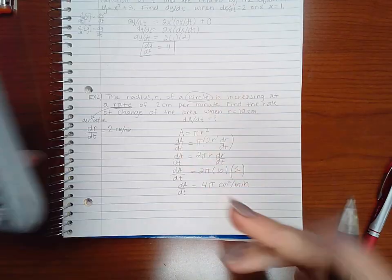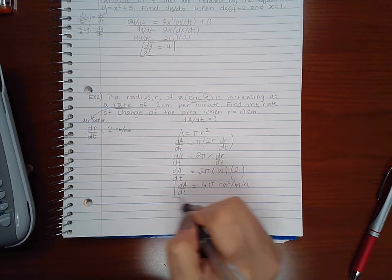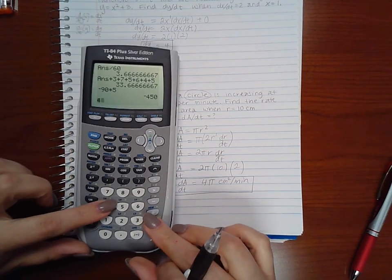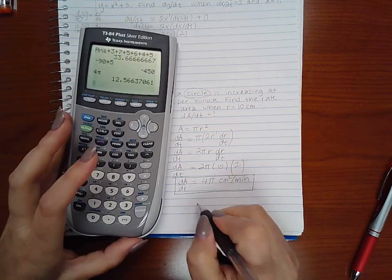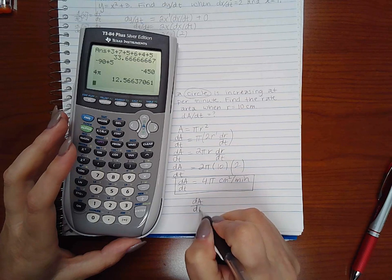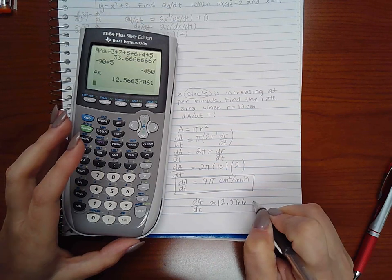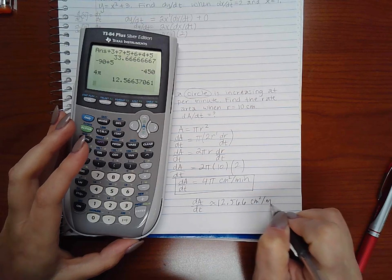If they ask you to type in a decimal, then use your calculator and type 40 pi, and da/dt will be approximately 125.66 centimeters squared per minute.